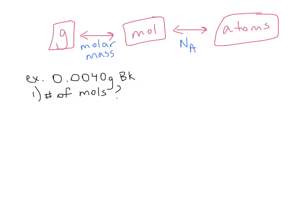I'm asking for the number of moles in 0.0040 grams of berkelium, and we want to think about significant figures as well. We'll start with 0.0040 grams — I've got my scale, and I found out the mass of berkelium that I have. This is how much berkelium I have, and I want to know how many moles that is. So I have grams of BK and I need to convert it to moles. Looking on your periodic table, berkelium is 247 grams per mole.